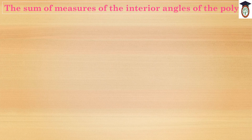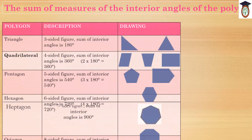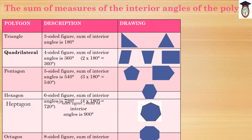The sum of measures of the interior angles of the polygon: A triangle has three sides — the sum of interior angles is 180 degrees. A quadrilateral is a four-sided figure — the sum of interior angles is 360 degrees, which is 2 times 180 equals 360. A pentagon is a five-sided figure — the sum of interior angles is 540 degrees, which is 3 times 180 equals 540.